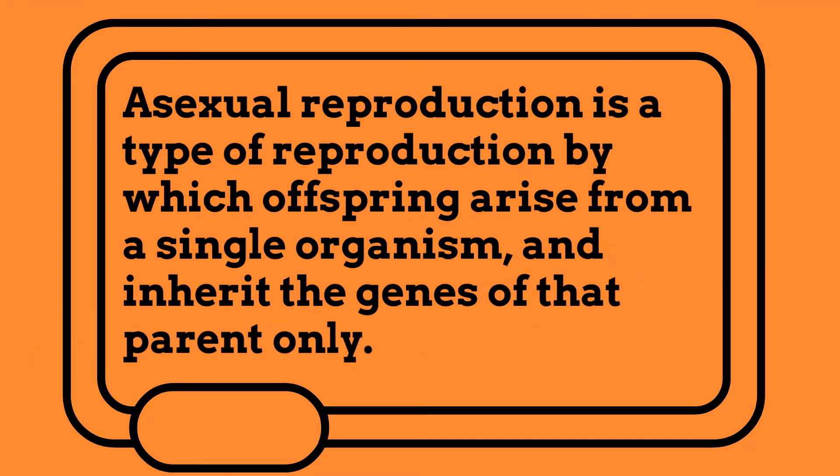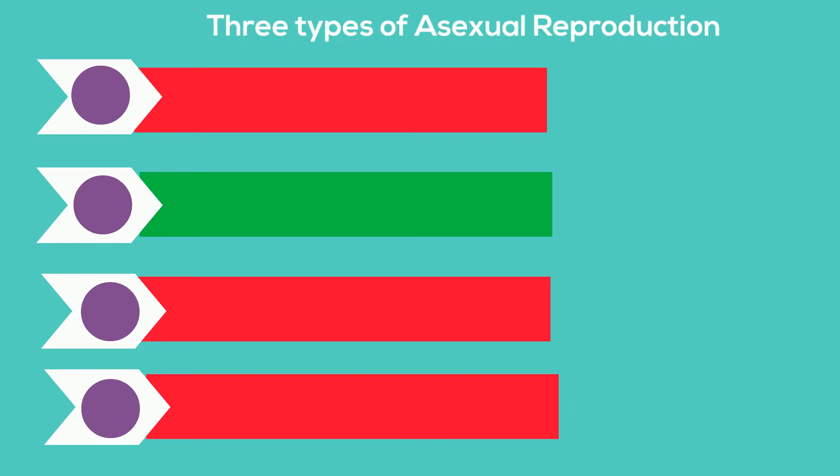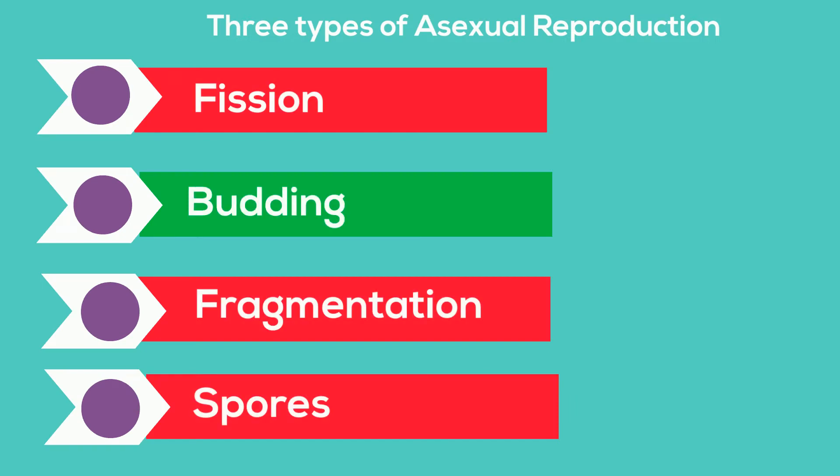Let's take a look at four types: fission, budding, fragmentation, and spores.